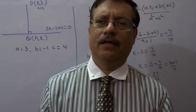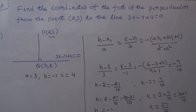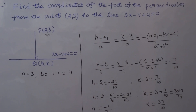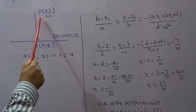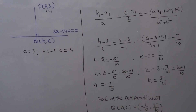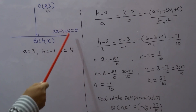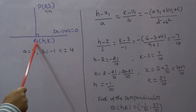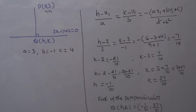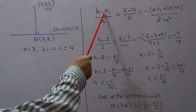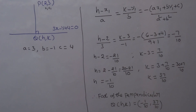Here is an example based on the foot of the perpendicular concept: Find the coordinates of the foot of the perpendicular from the point (2, 3) to the line 3X - Y + 4 = 0. Given point P is (2, 3), so X1 = 2, Y1 = 3. The given line is 3X - Y + 4 = 0, so A = 3, B = -1, C = 4. Q(H, K) is the foot of the perpendicular from point P to the line. Applying the formula: (H - X1)/A = (K - Y1)/B = -(AX1 + BY1 + C) / (A² + B²).